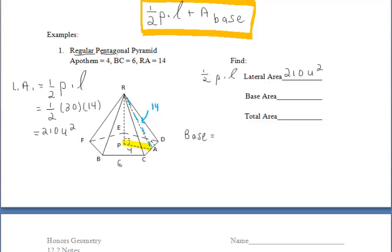Now let's find the area of the base using prior knowledge. Since the base is a regular pentagon, we find the area of that regular polygon by doing one half of the apothem times the perimeter. The apothem is 4 and the perimeter of our base is 30, so the base area is 60 units squared.